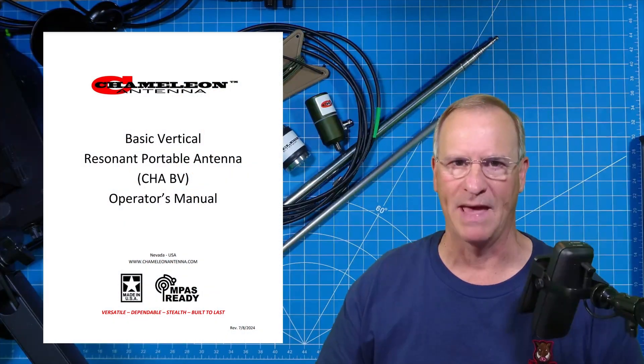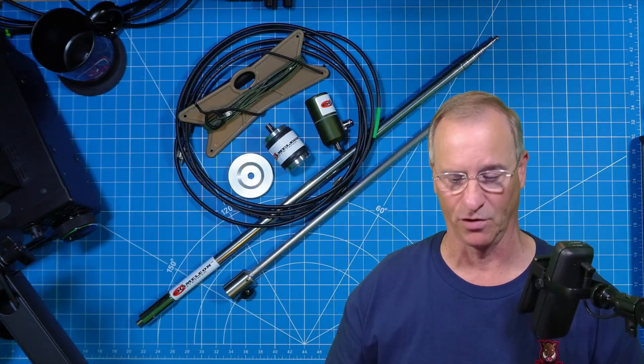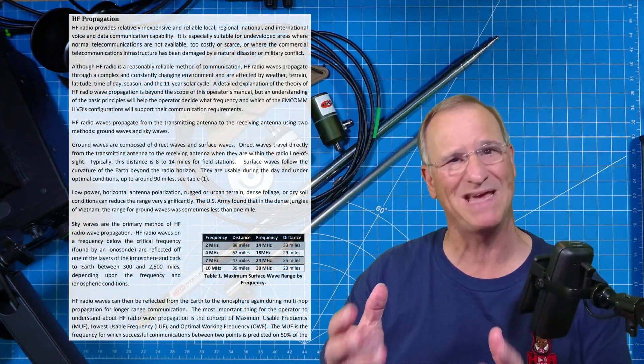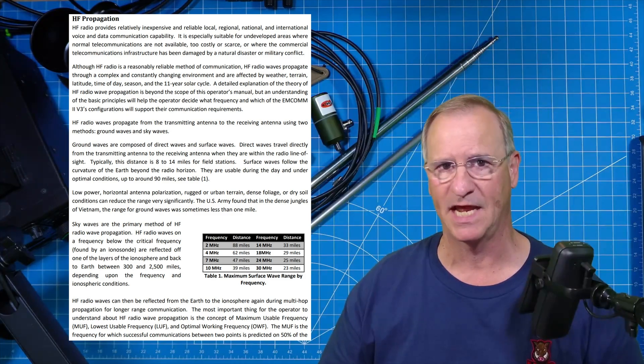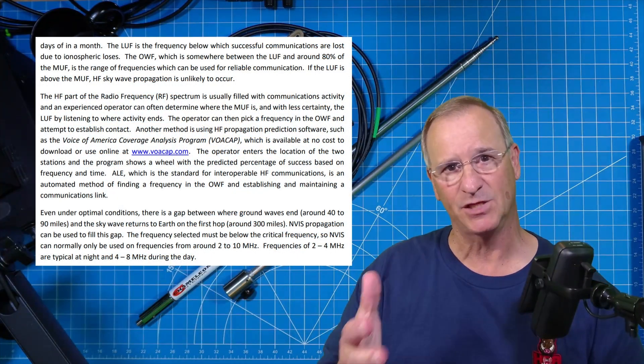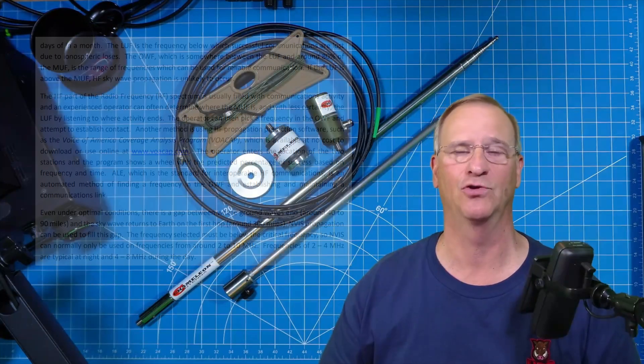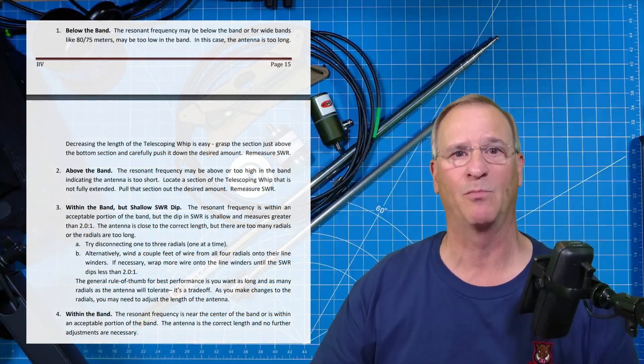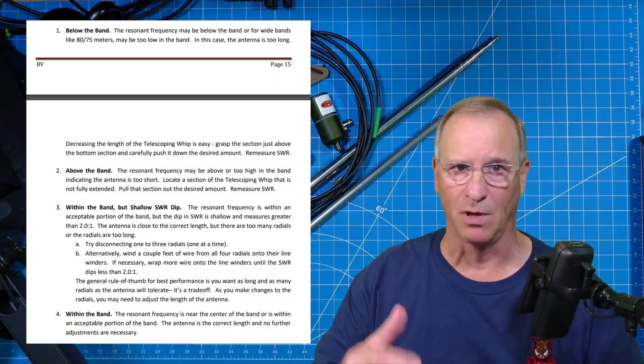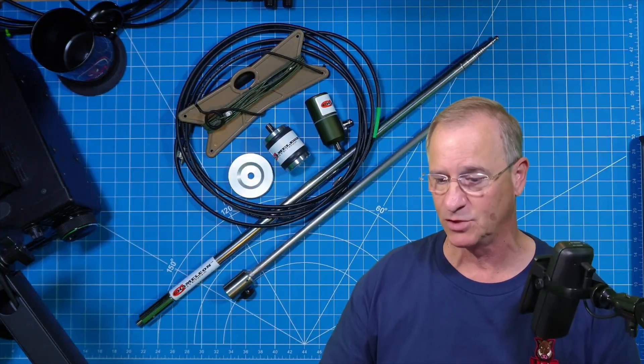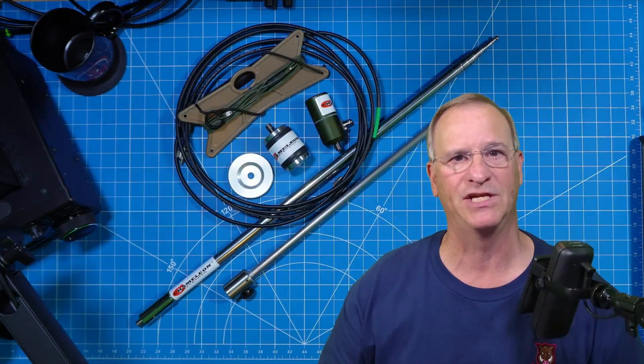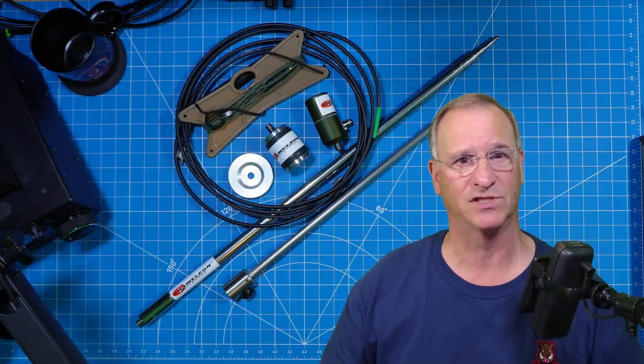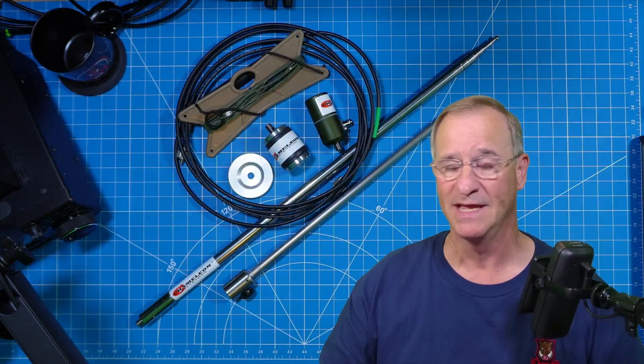I want to talk about the instruction manual that comes with the CHA-BV, the basic vertical. Chameleon always does a really good job with the use manual, the instruction manual. They talk about things beyond just the particular antenna. They talk about antenna performance in general and propagation. In this particular instruction manual, they talk about how to tune a resonant vertical antenna. It's incredibly helpful. They tell you what to do, how to set it up with an analyzer, what to do if you're above the band, below the band, in the band, but want to get a little bit more bandwidth. And I just want to encourage you to check this out. It'll be good for your education. Some of you know this intuitively. You have an engineering mind. You understand RF. Some of us are continuing to learn and this is a good refresher and a reference manual.